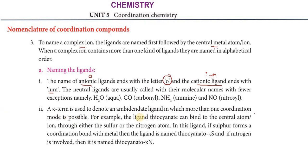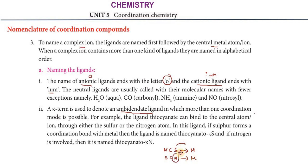Kappa (κ) notation is used to denote an ambidentate ligand. An ambidentate ligand has two possibilities for binding. For example, NCS (thiocyanate) — one end is nitrogen (N) and the other is sulfur (S). The metal atom can link through either the sulfur or the nitrogen end.